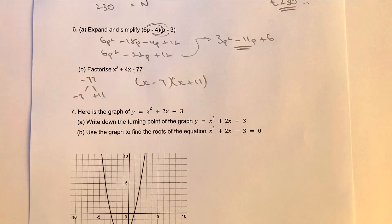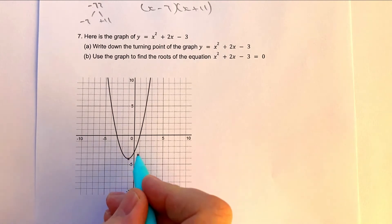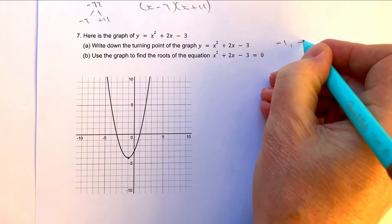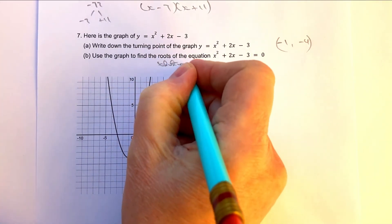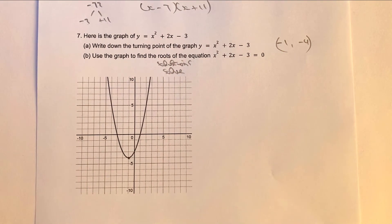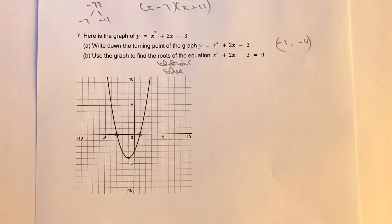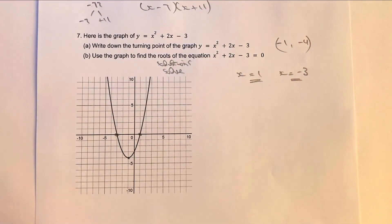We're moving on at a fairly good pace, with two questions left. From the graph, we're asked to write down the turning point. The turning point is the point where the line turns back on itself — in this case, minus 1, minus 4. The other part asks us to use the graph to find the roots, which is another word for solutions — where the line crosses the x-axis. That gives x equals 1 and x equals minus 3.